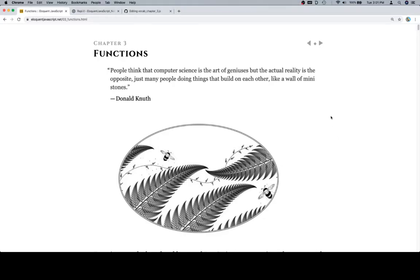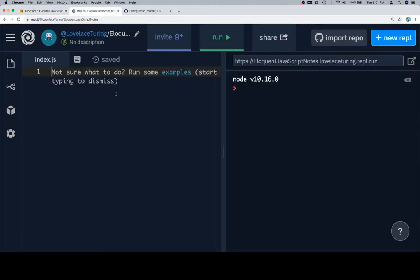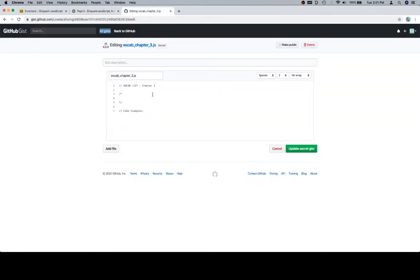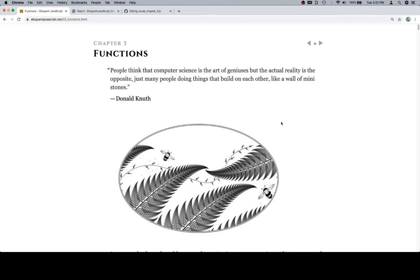Hey everybody, welcome back. We're going to do Chapter 3 of Eloquent JavaScript. We've got our replit in case we want to run any code outside of the sandbox that the Eloquent JavaScript interface provides, and we've also got a gist here that we're going to build the vocabulary list for this chapter. It will also be linked in the description. So without further ado, let's go ahead and jump into it.